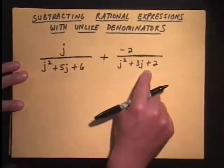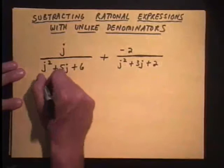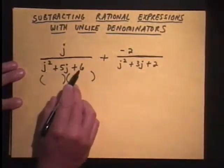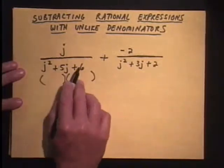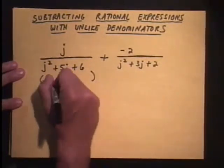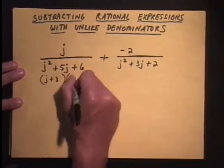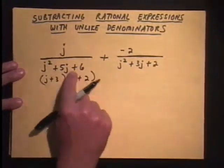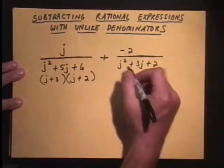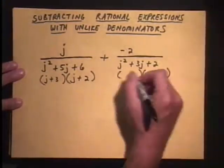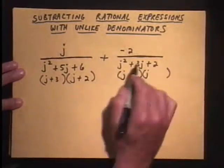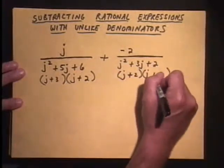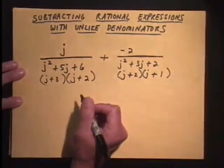Then I'm going to factor the denominator. We have two trinomials here. When we factor these, j squared plus 5j plus 6, the factors of 6 that will add to give me 5 in the middle is j plus 3 times j plus 2. You can foil this and check it from previous lessons. The second trinomial, these aren't too bad to factor. j, j, factors of 2 that will add to give me 3, not a lot of choices here, plus 2, plus 1.